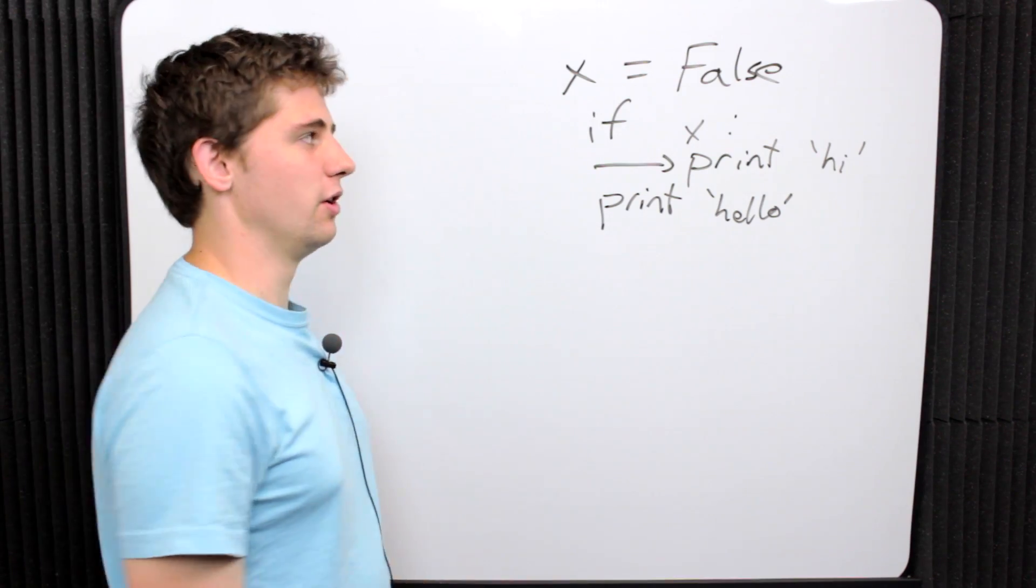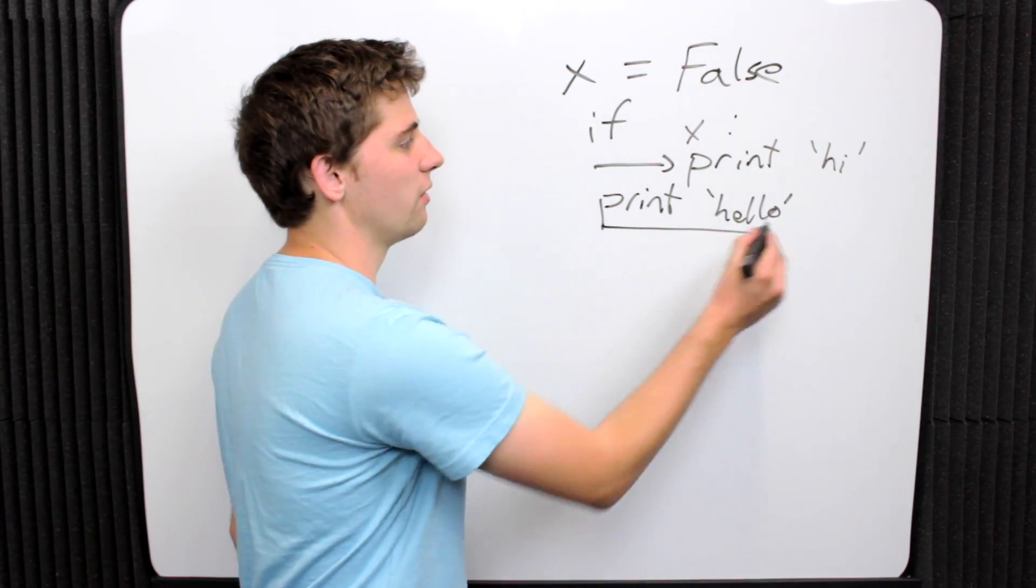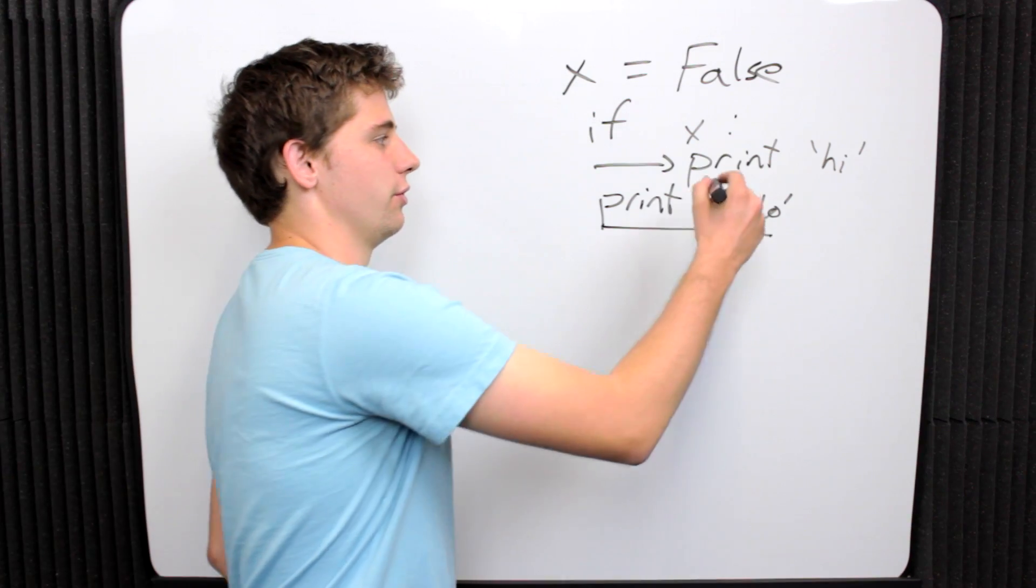So executing this code, no matter what the value of x is, will always print 'hello'. But only if x is true will 'high' get printed.